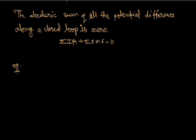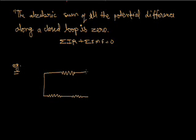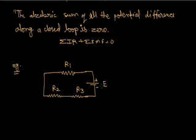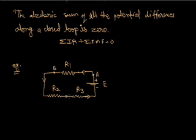Let us take an example. Here there is one resistance. Current is flowing from the positive terminal to the negative terminal. We choose points: A, B, C, and D on the circuit.